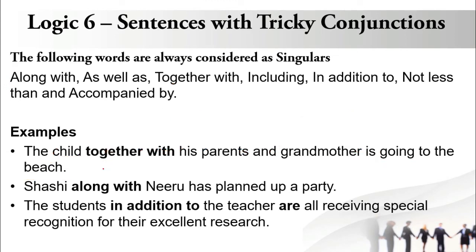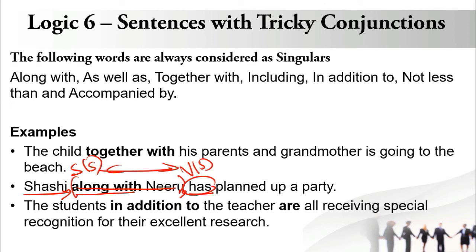Next example: 'Shashi along with Neeru has planned a party.' The commas are missing — apply them. First comma right before 'along with,' second comma right before 'has.' The part 'along with Neeru' is junk. Subject is Shashi — singular. Verb is 'has' — singular. They match. Agreement is perfect. Next: 'The students in addition to the teacher are all receiving special recognition for their excellent research.' Apply commas — first before 'in addition to,' second before 'are.' Subject is students — plural. Verb is 'are' — plural. They match.